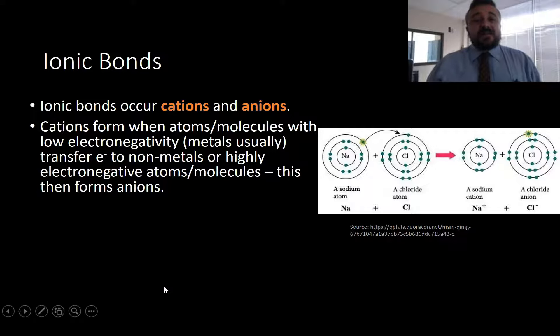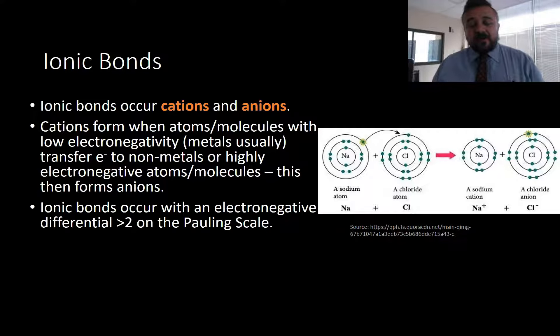When we have this large electronegative difference, what that means is we have an element, which is about to become an anion, is able to attract or pull electrons away from an element which is much less electronegative. So, again, it's that greater than 2 on the Pauling scale.